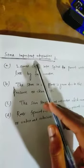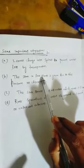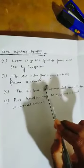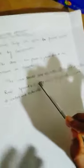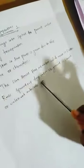Desert plants — some important adaptations: A — leaves change into spines to prevent water loss by transpiration; B — the stem in some plants is green due to the presence of chlorophyll, which allows photosynthesis. Different pigments include xanthophyll, anthocyanin, carotinoids, and chlorophyll. C — the stem stores food and water, which gives it a fleshy, sponge-like structure; D — roots spread out deep underground in search of water and nutrients.